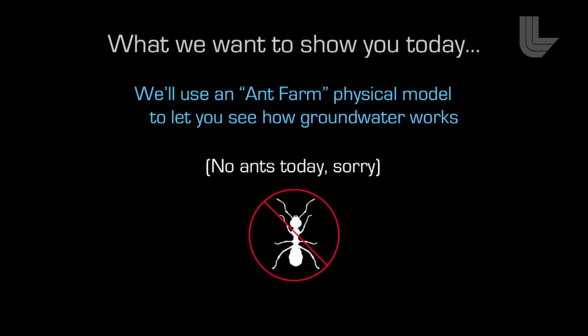The way I want to do this is to use this physical model you can see over here. We're going to go to that a couple of times and look at how things work in it. It's not really an ant farm — there are no ants. It's kind of a little toy name I like to use. It's sort of a cross section of the earth.